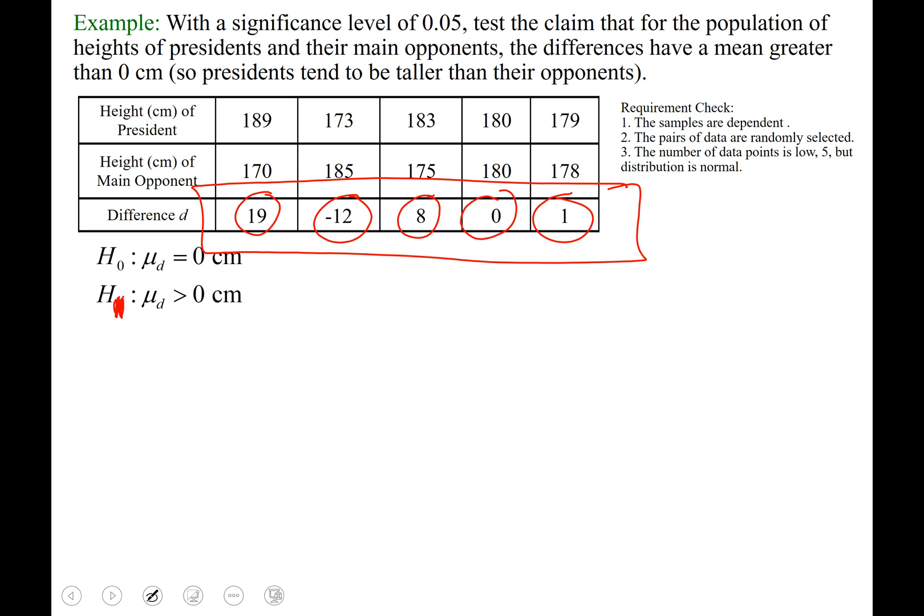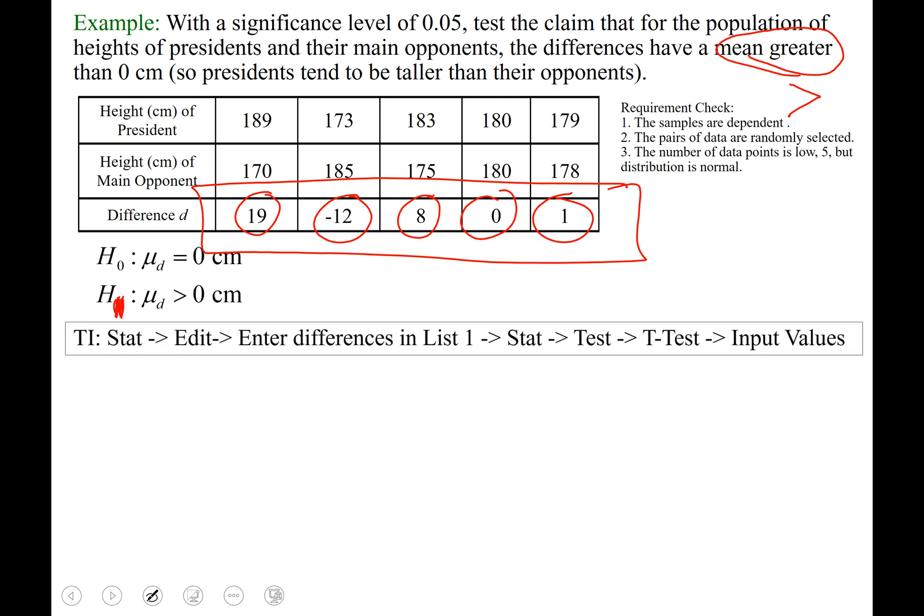And we are using a greater than sign for the alternative hypothesis because of the wording of the claim that they have a mean greater than 0 centimeters.